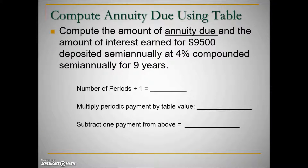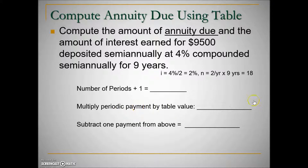Let's see how this works. We need to compute the amount of an annuity due and the interest earned for $9,500 deposited semi-annually at 4% compounded semi-annually for nine years. Compounding semi-annually is twice per year for nine years, so normally for an ordinary annuity we would have 18 periods. Because it's an annuity due, we add one, giving us N = 19.